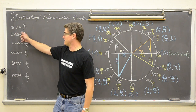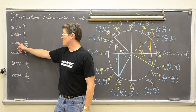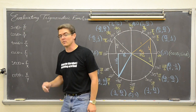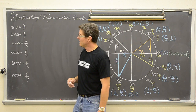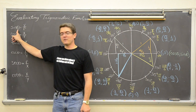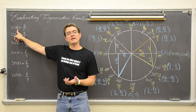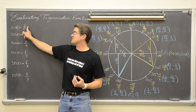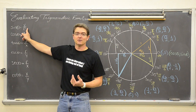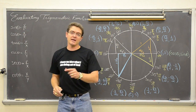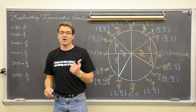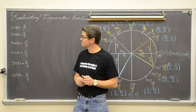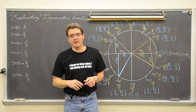Sine of theta is y over r, cosine of theta is x over r, tangent of theta is y over x, and so on. In a trig function you put in an amount of rotation — either degrees or radians — and you get out the sides of a triangle. So in goes an angle, out comes a triangle ratio with your six trig functions. Let's evaluate a couple.